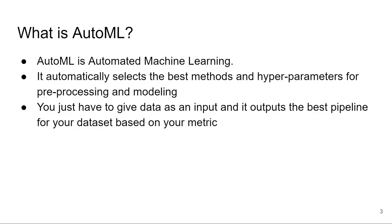What is AutoML? AutoML is Automated Machine Learning. It automatically selects the best methods and hyperparameters for preprocessing and modeling. You just have to give data as an input and it outputs the best pipeline for your dataset based on your metric.